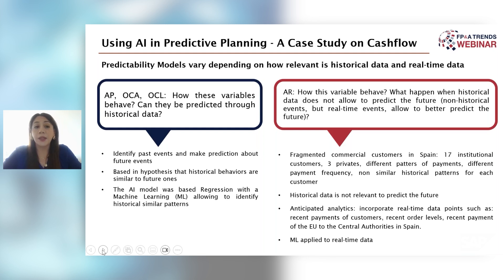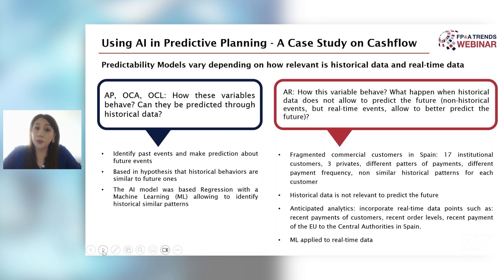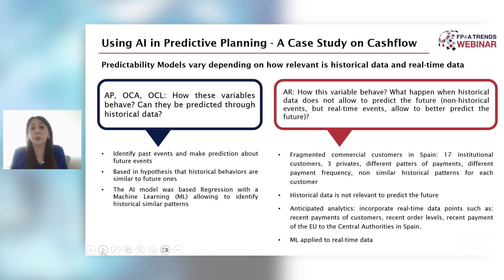The problem becomes harder when you're in an uncertain time, as was the case during COVID. Accounts receivable — accounting for 70% of total cash flow — was completely unpredictable from historical data, because 70% of our customers were autonomous regions in Spain, and the three private customers were not paying as they used to. Everyone was behaving in a very erratic way.